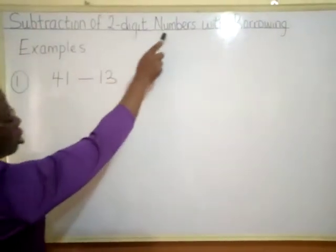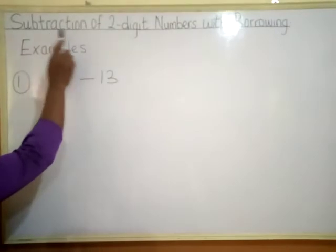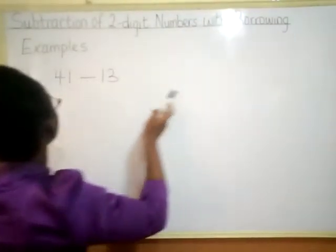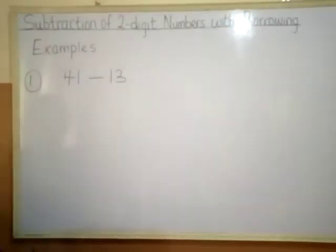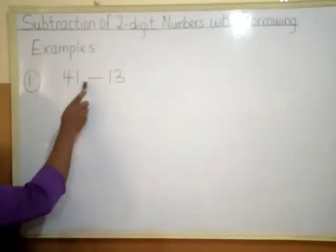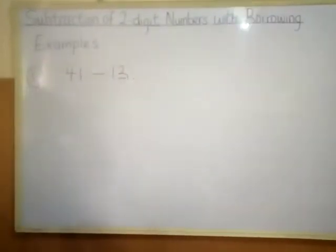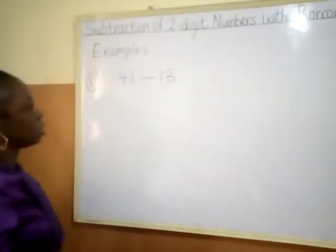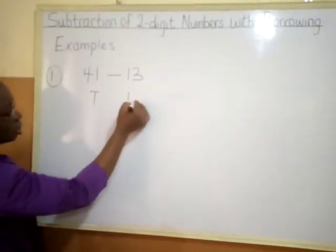Subtraction of two-digit numbers with borrowing. We have some examples here. So let's take example one. We have 41 minus 13. Usually, whenever we have two-digit numbers, we arrange them in tens and units.